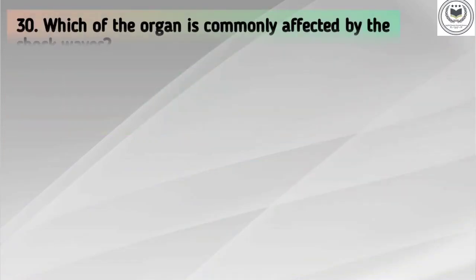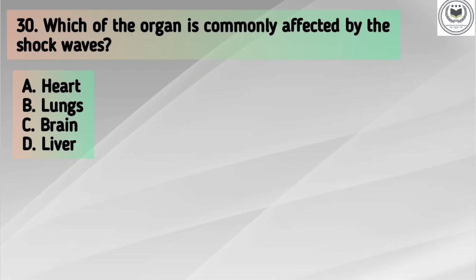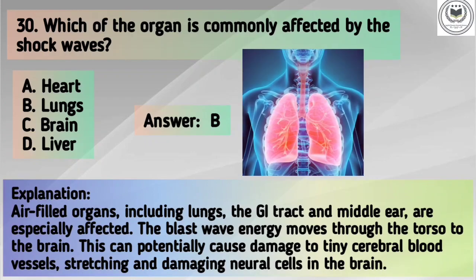Question number 30. Which organ is commonly affected by shockwaves? Options: A. Heart, B. Lungs, C. Brain, D. Liver. The correct answer is option B, Lungs. Explanation: Air-filled organs including lungs, the gastrointestinal tract, and middle ear are especially affected. The blast wave energy moves through the torso to the brain, which can potentially cause damage to tiny cerebral blood vessels, stretching and damaging neural cells in the brain.